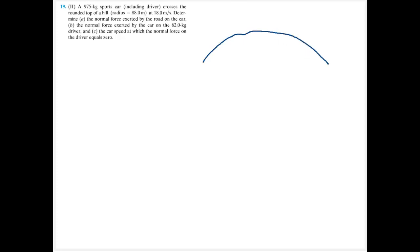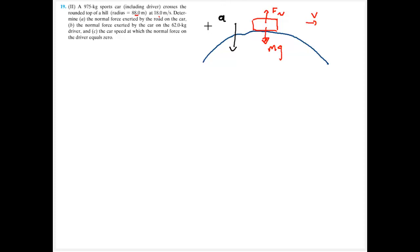For number 19, a sports car is coming over a big hill. We know driving over hills fast makes us feel nearly weightless. The hill has a radius of 88 meters and the car travels at 18 meters per second. The forces on the car and driver are mass times gravity downward, normal force upward, and the centripetal acceleration pointing downward.